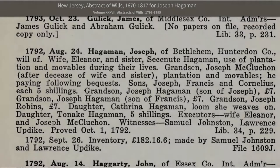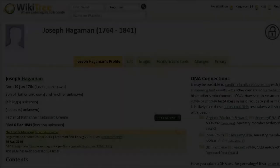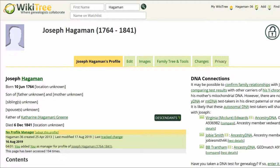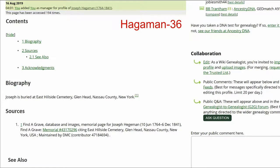Now, in researching Hagerman 36, there is an abstract of his will on Ancestry, proved October 1, 1792 — the date by which he had died. It is clear these two profiles represent two different people. The Find a Grave link needs to be removed from Hagerman 36.